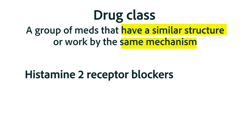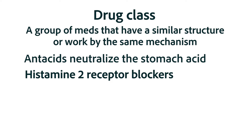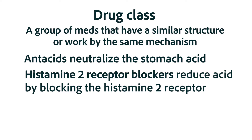For instance, antacids are in a drug class that is against acid, and they simply neutralize the acid in the stomach. The histamine 2 receptor blocker also reduces stomach acid, but it's not in the same drug class as antacids because they reduce the acid in a completely different way, and we'll see how they work in this chapter.